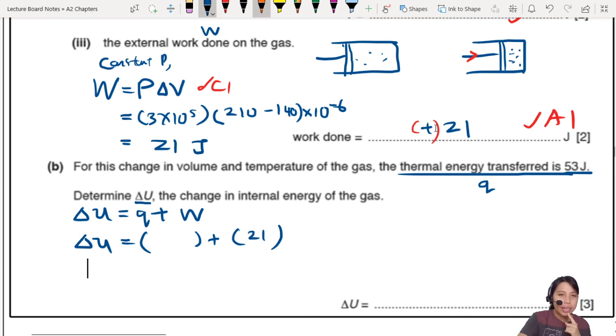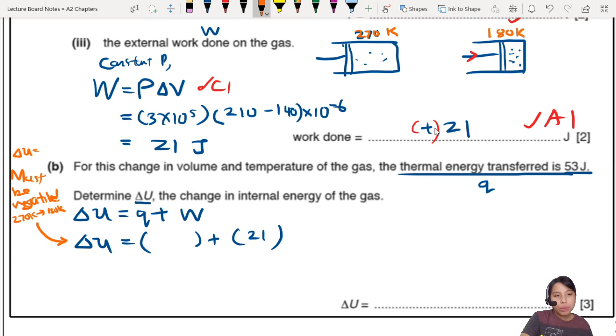We know W is positive 21 because they're doing work on the gas, compressing it, therefore, it's positive 21. But what is Q? Here is where you need to look at the diagram very carefully. Here's some hints. You know there's a temperature change from 270 K, change into a lower temperature, which is 170 K. That is an important hint. So, you know that this delta U must be negative.